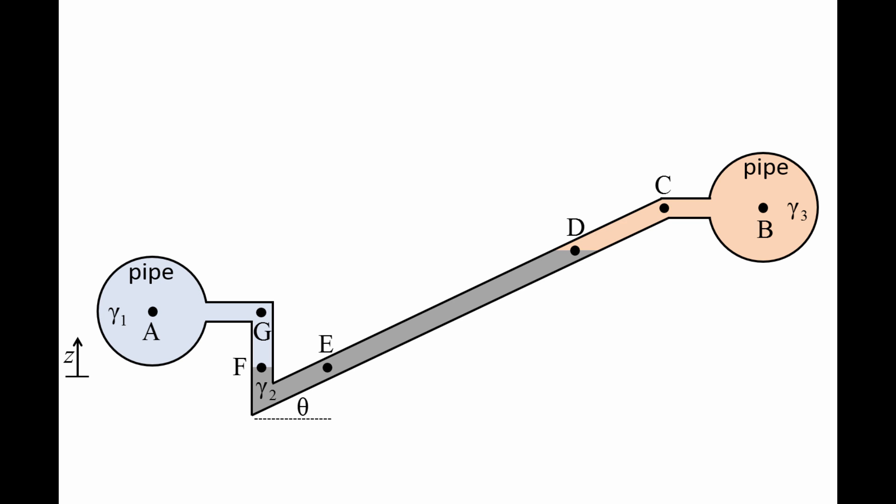The specific weight of the fluid in the devices is gamma 1 and gamma 3, while the gauge fluid has a specific weight of gamma 2. Points A and B are at the center of the two sections of pipe. Point C is located at the same elevation as point B, and point D is at the interface between fluids 2 and 3.